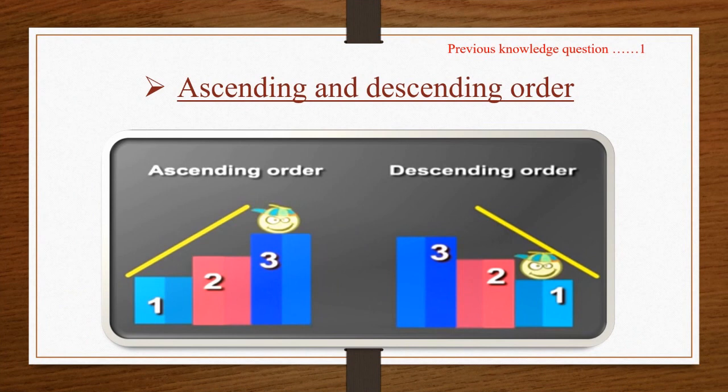Students, you can see on your screen the picture of ascending and descending order. Ascending order means the numbers which start from smaller to bigger, and descending order means the numbers which start from bigger to smaller.